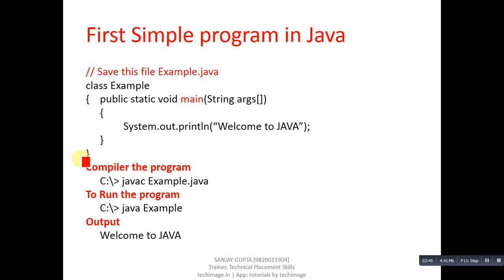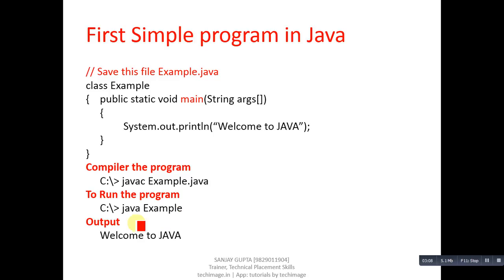You have to save this code with a .java extension. For compilation, write 'javac example.java' on the command prompt. To run it, write 'java example' — only 'example' because the bytecode is stored with a .class extension. The output of this program will be 'Welcome to Java'.